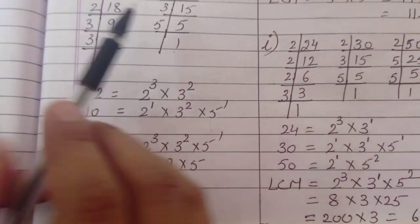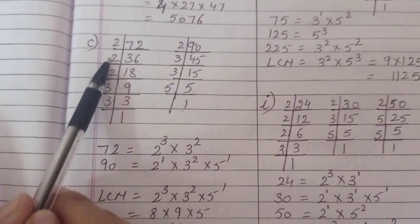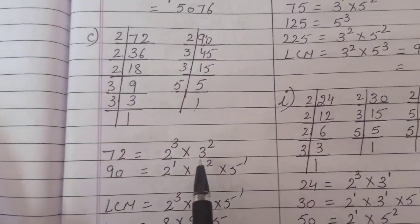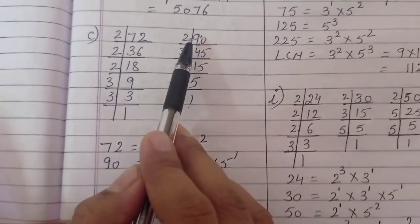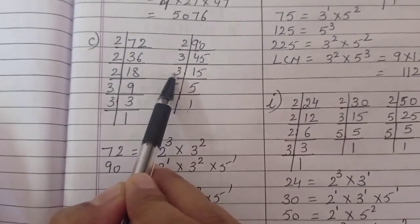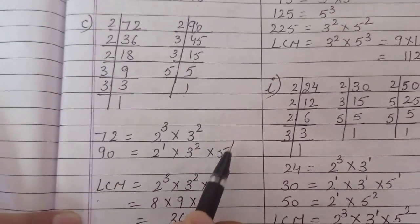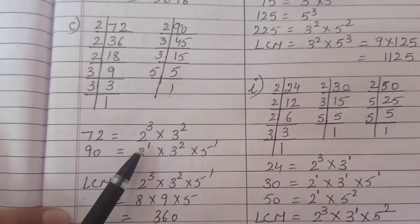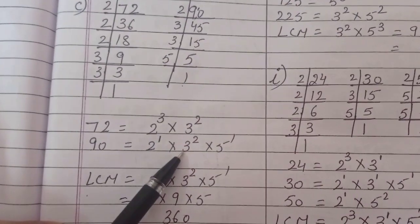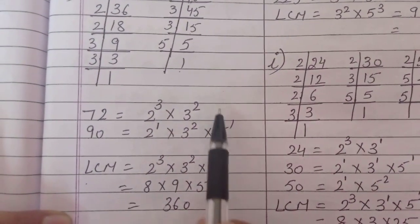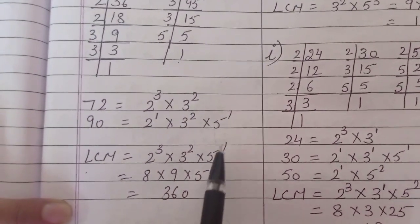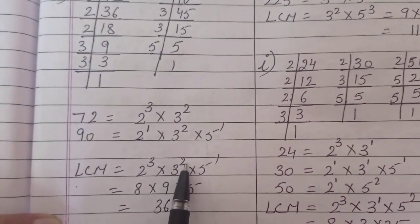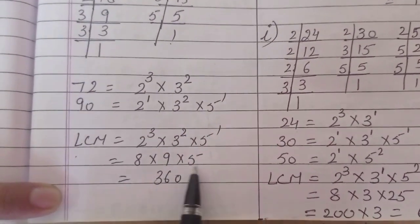Now write the factors in power form. For 72: 2 appears 3 times, so 2 power 3. And 3 appears 2 times, so 3 power 2. For 90: single 2, so 2 power 1. Then 3 power 2. And 5 single time, so 5 power 1. Let's take LCM: 2 power 3 and 2 power 1 — take the greatest, 2 power 3. 3 power 2 and 3 power 2 — both same, take one. 5 is here but not there, but we have to cover all numbers, so 5 power 1. 2 power 3 means 2 twos are 4, 4 twos are 8. 3 power 2 means 3 threes are 9. Into 5. Multiply — this will be your LCM.